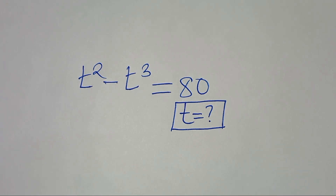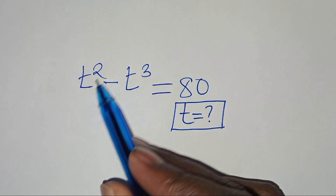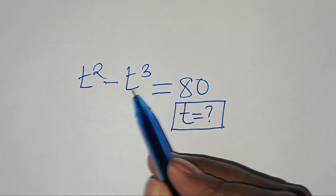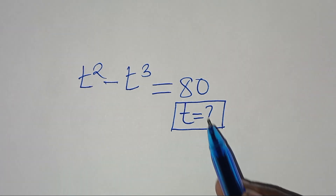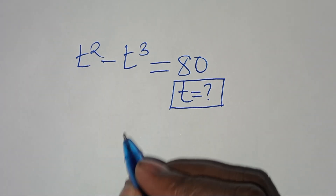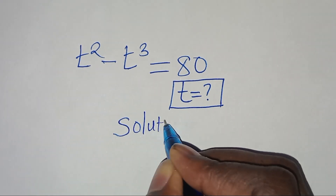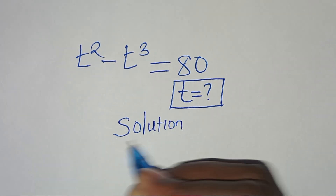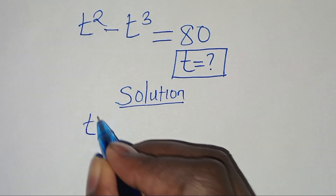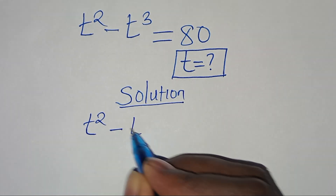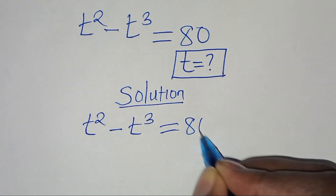Hello everyone, you're welcome to solve this nice algebra problem which is t to the power of 2 minus t to the power of 3, and this is equal to 80. So what is the value of t? Now let's provide a solution. From here we have t squared minus t to the power of 3 is equal to 80.